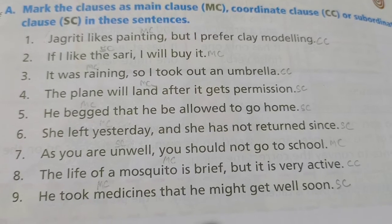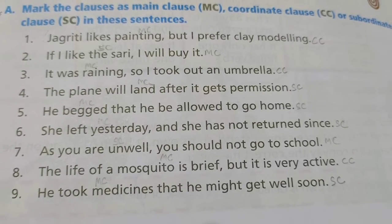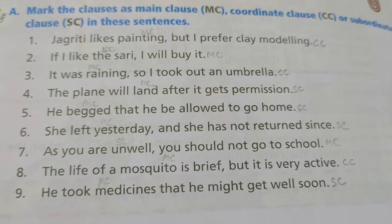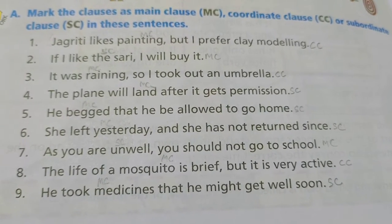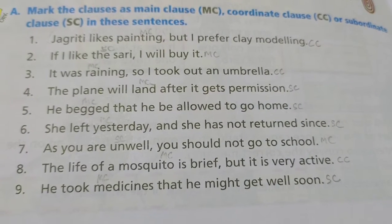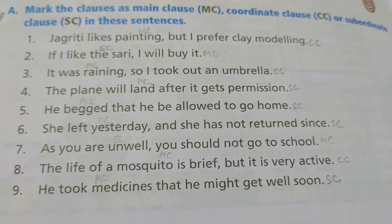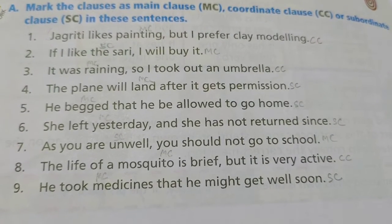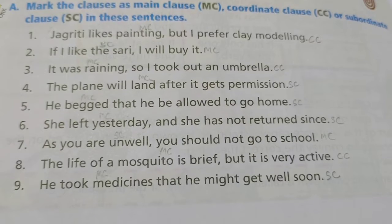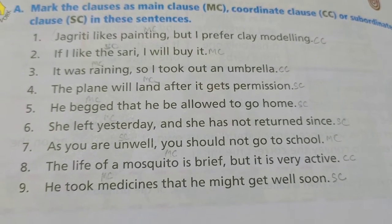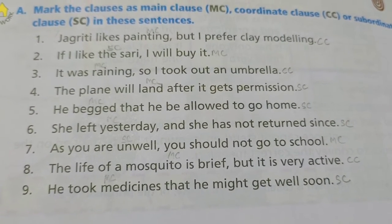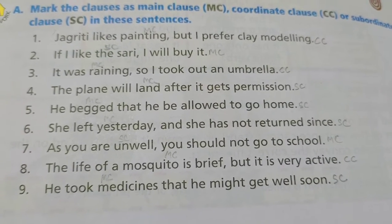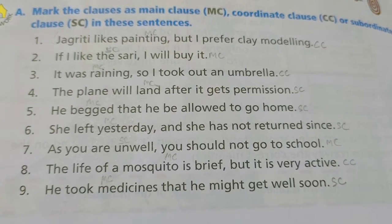Fifth: 'He begged' is main clause; 'he be allowed to go home' is subordinate clause. Sixth: 'She left yesterday' is main clause; 'she has not returned since' is subordinate clause. Seventh: 'As you are unwell' is subordinate clause; 'you should not go to school' is main clause. Eighth: 'The life of a mosquito is brief' is main clause; 'it is very active' is coordinate clause. Ninth: 'He took medicines' is main clause; 'he might get well soon' is subordinate clause.